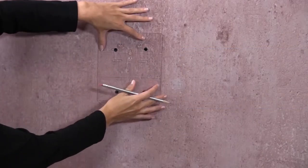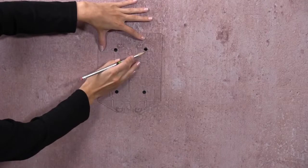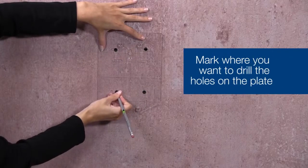Taking your clear backplate, hold it up to the wall and mark where you'll need to drill the new holes on the backplate.